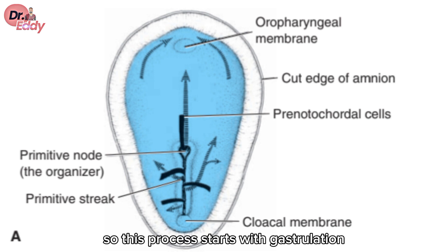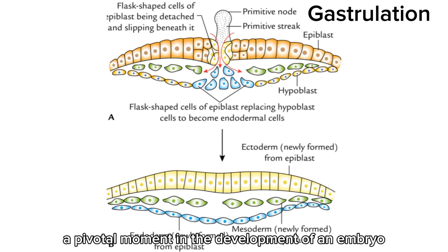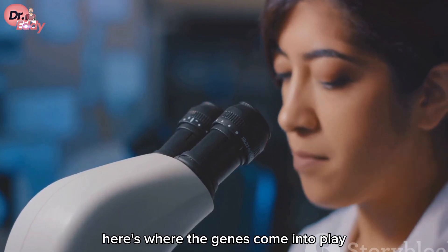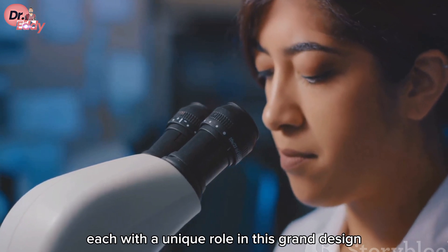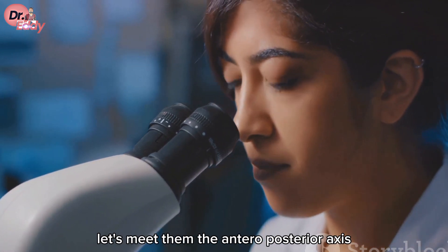This process starts with gastrulation, a pivotal moment in the development of an embryo. Here's where the genes come into play, each with a unique role in this grand design.